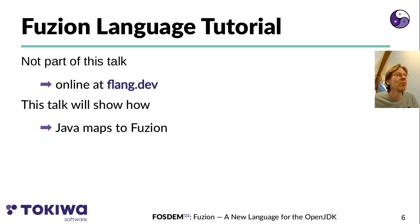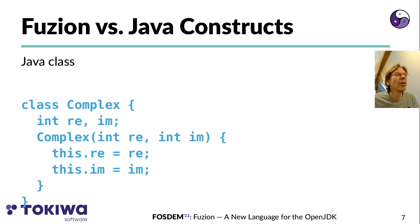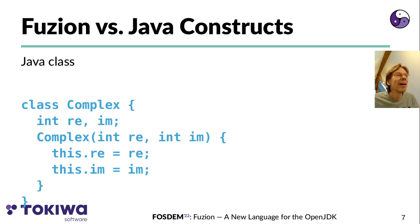This talk is not a Fusion language tutorial. For an introduction and tutorial please go online to flang.dev. What I will show in this talk is how Java features map to Fusion features, and I'll dive directly into a small example: a Java class that provides complex numbers based on integers, and how such a class would be implemented in Fusion.